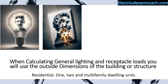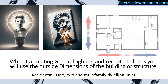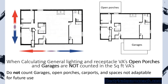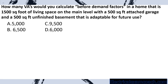When calculating our general lighting and receptacle loads, we will use the outside dimensions of a building or structure — we measure from the outside of the building in both directions to determine square footage. Open porches and garages are not counted in our general square foot VAs. We do not count garages, open porches, carports, and spaces that are not adaptable for future use. Now — how many VAs would you calculate before demand factors? I haven't taught you what a demand factor is yet, so I'm going to teach you a little bit at a time, and by the time we round back around to it, you'll be a pro at it.